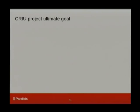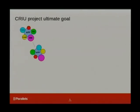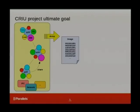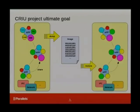So, what's our ultimate goal? Let's consider having an application. It can have various resources: virtual memory, open files, credentials. A typical Linux application has lots of them. There may be more than one application, and several applications can share various things with each other — open files, memory, and many other things. These applications can live in an environment known as containers, namespaces, or control groups. What we want to do is take the whole state of this picture, dump it into some format on disk, and that format should contain enough information so that we can later restore the original state exactly as it used to be.